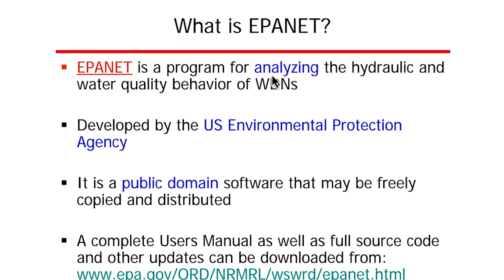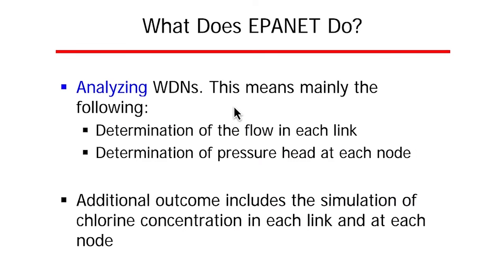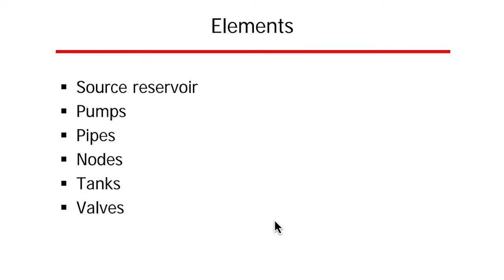EPANET is a program for analyzing the hydraulic and water quality behavior of water distribution networks developed by the EPA. It is public domain software. What it does includes: determination of the flow in each link, determination of the pressure head at each node, and simulation of chlorine concentration in each link and at each node to understand water quality behavior within the pipe network.